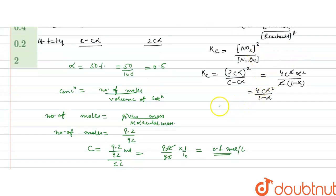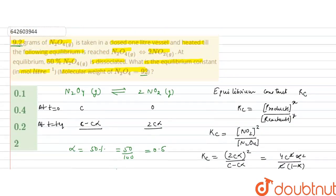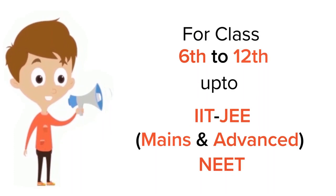Now we can calculate Kc by substituting: Kc = 4 × 0.1 × (0.5)² divided by (1 − 0.5) = 4 × 0.1 × 0.25 / 0.5 = 0.2 mole per liter. So the equilibrium constant is 0.2 mole per liter, and the correct answer is option C. I hope you understood the solution.